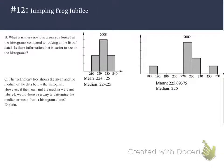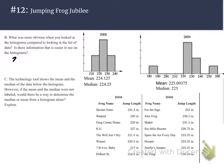Moving on to letter B. It says, what was more obvious when you looked at the histograms compared to looking at the list of data? Is there information that is easier to see on the histograms? Well, I know that in 2008, as mentioned before, it looks pretty balanced or symmetrical.